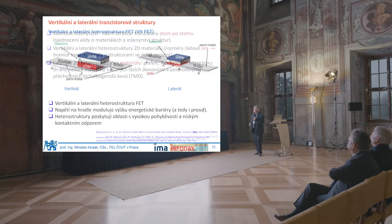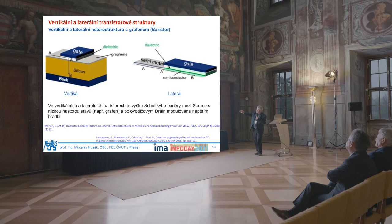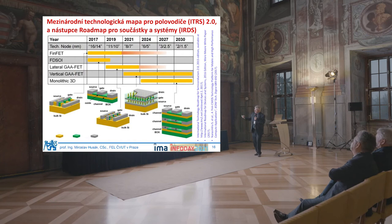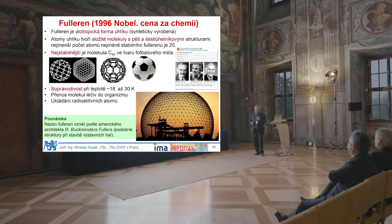2D heterostructures — typically graphene — give us new structures for future elements, both vertical and lateral ones. Graphene enables creating gates which are much more efficient in the elements. This is a roadmap with vertical and horizontal structures. Intel is using it for processes, and this is just an example of where it is leading to. This roadmap leads to 2030.